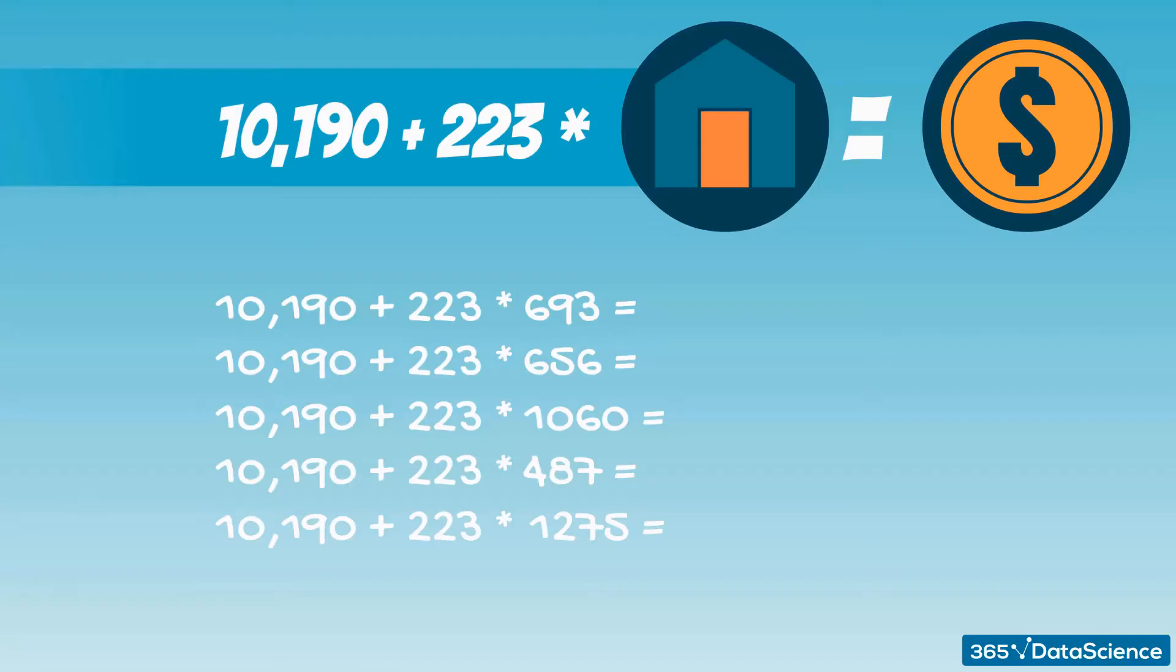Well, for the first one, we get 10,190 plus 223 times 693 equals 164,729. Then we can find the next one, and so on, until we find all prices.